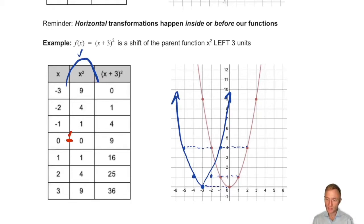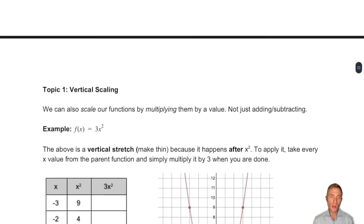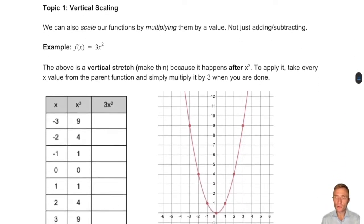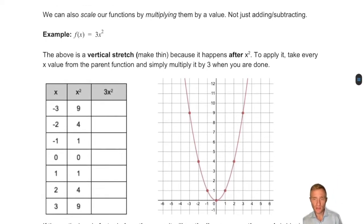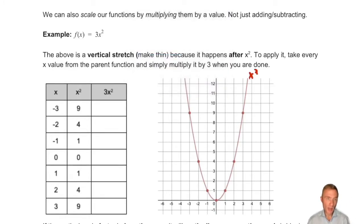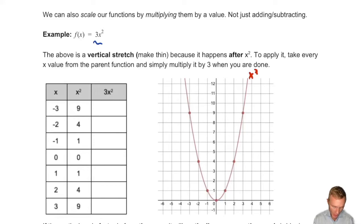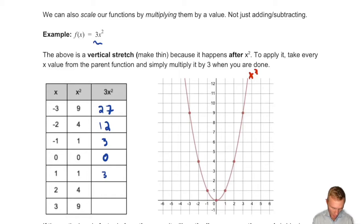So that inside versus outside distinction is going to be really important today. The first thing we're going to talk about is vertical scaling. Instead of shifting our function up and down, we're going to pinch it to stretch it or compress it to flatten it — make it wider. Working again with y equals x squared as our normal function, if I change that by making it 3x squared, the 3 happens after the x squared. So it's just: take every y value from your old function and multiply it by 3. If x squared is 9, then 3x squared is 27. If x squared is 4, then 3x squared is 12, and so on.